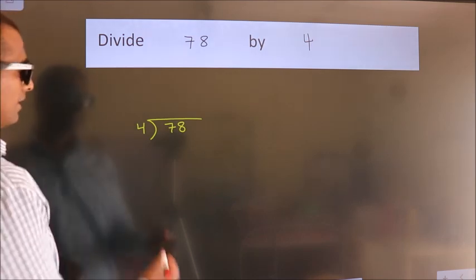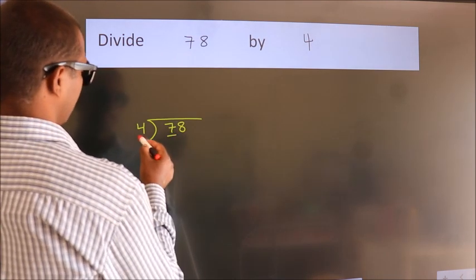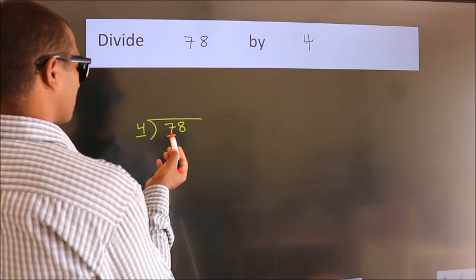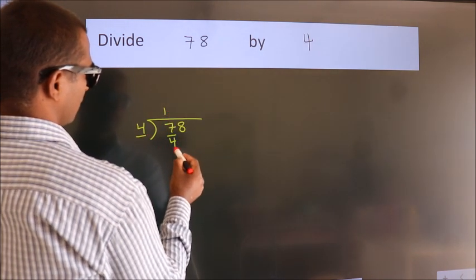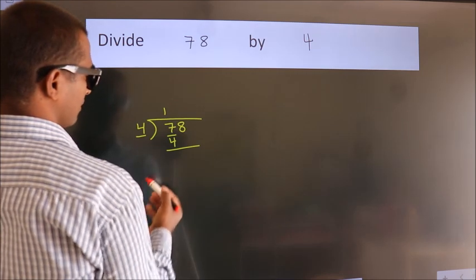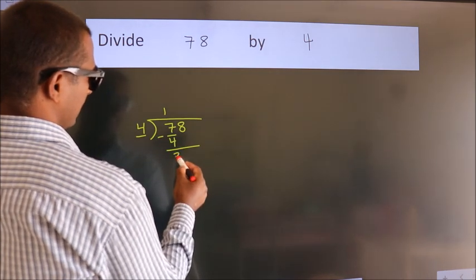Next, here we have 7, here 4. A number close to 7 in the 4 table is 4 times 1, which is 4. Now we subtract and get 3.